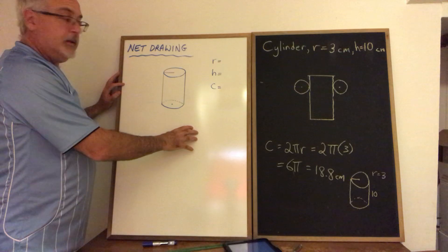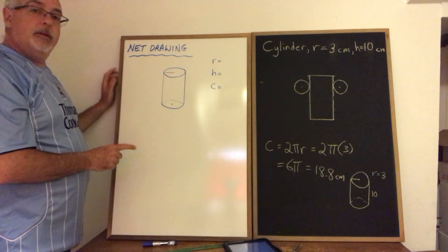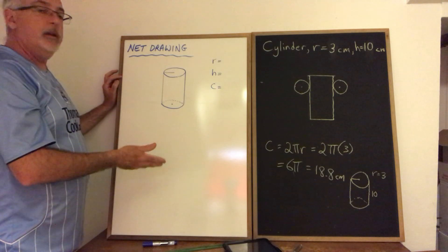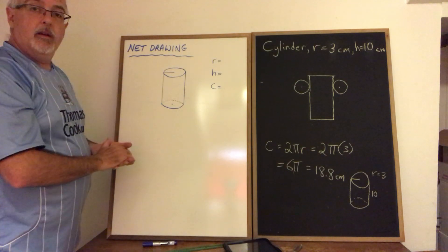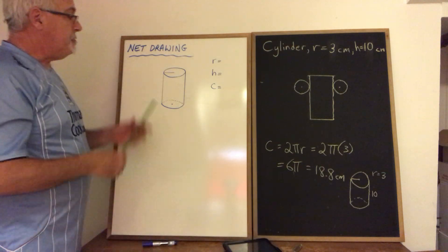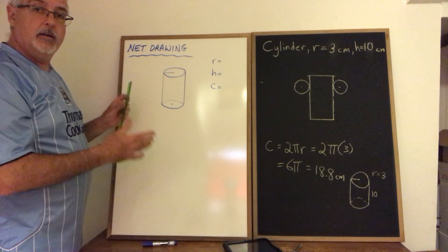Now we're going to move to this other example. And this one's a little different because no dimensions are given. They haven't told us what the radius or the height or the circumference are. But we have a drawing of the 3D cylinder. So we have no choice but to measure that to get our dimensions.